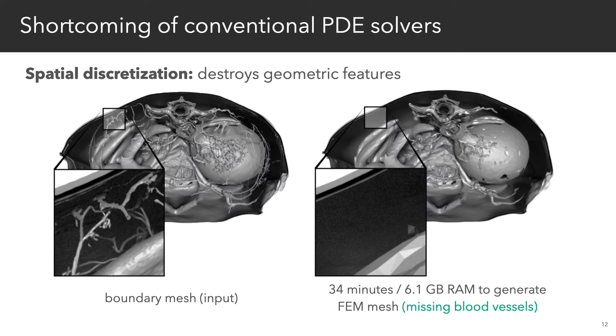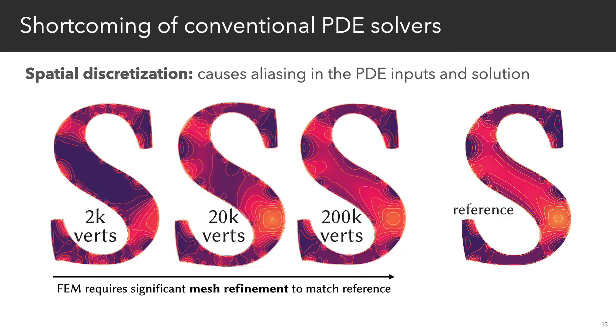discretization also causes two major headaches for solving PDEs. Important geometric features often get destroyed, and significant mesh refinement can be needed to remove aliasing artifacts in the PDE solution, boundary conditions, and coefficients.